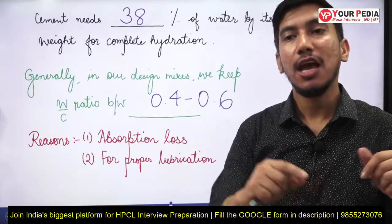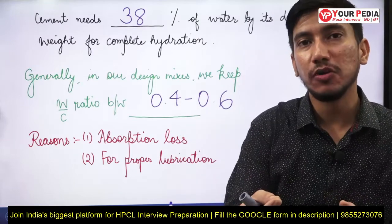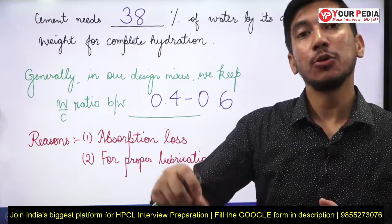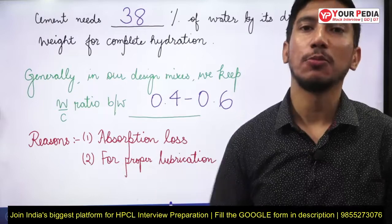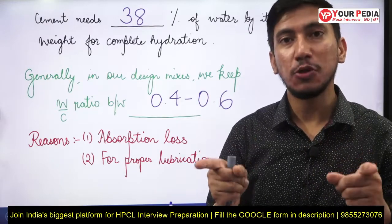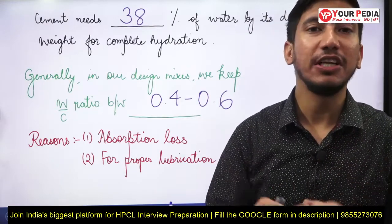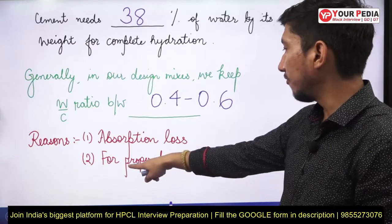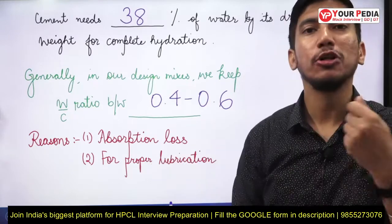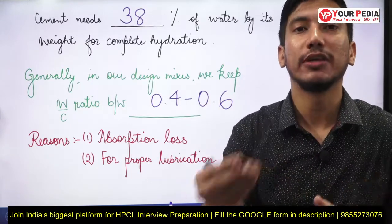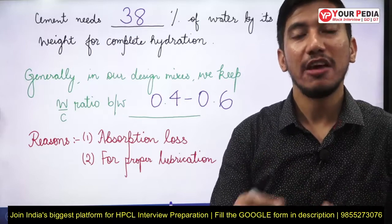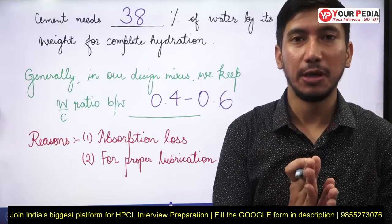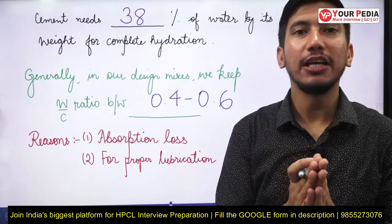Apart from aggregates, if we use wooden formwork, wood also has pores on its surface and absorbs some water — so there is absorption loss from that too. Additionally, we need some extra water for proper lubrication and to make our concrete mix workable.